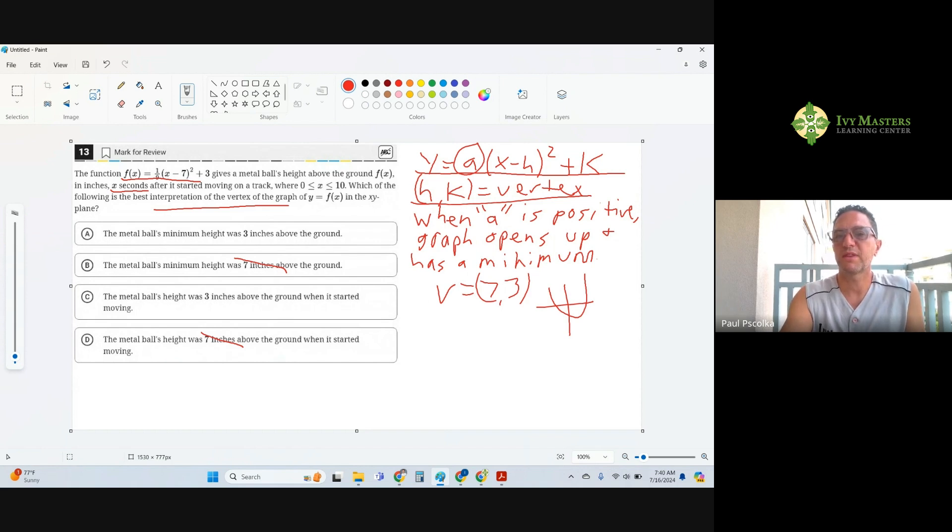If you notice the +k out here, that's the y part that's going to be your minimum. So what's your minimum? Your minimum here is 3, and notice here it says minimum of 3 inches. A is going to be your answer.